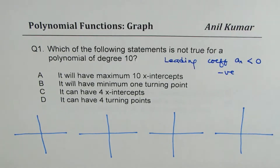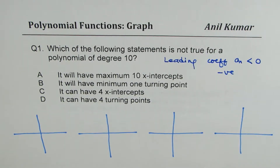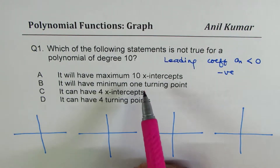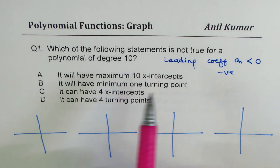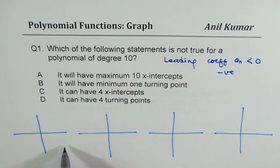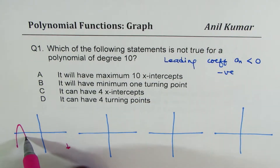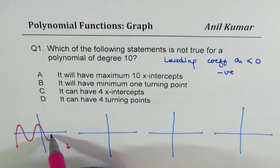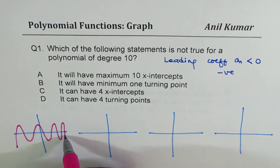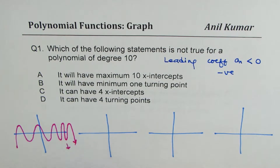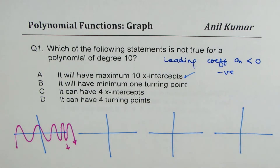First: it will have maximum 10 x-intercepts. Well, that's correct. If the degree is 10 and the leading coefficient is negative, the right side is down. So the maximum could be 1, 2, 3, 4, 5, 6, 7, 8, 9, 10 x-intercepts — all linear factors. That will result in the first case, so that statement is true.